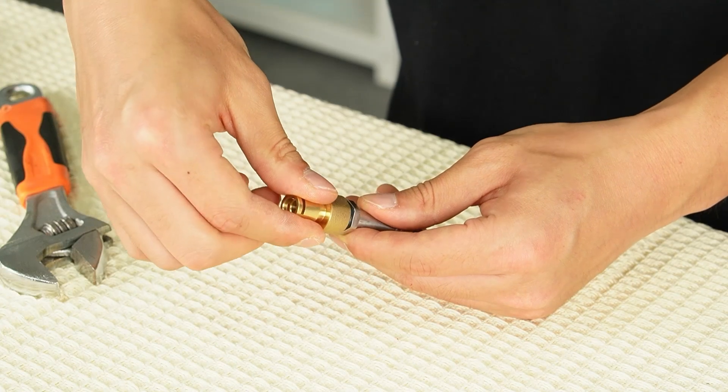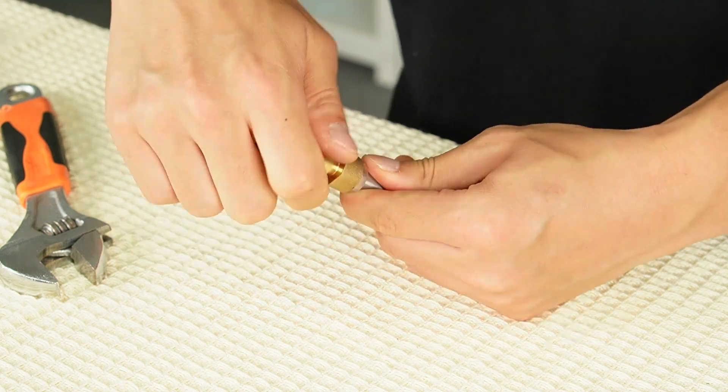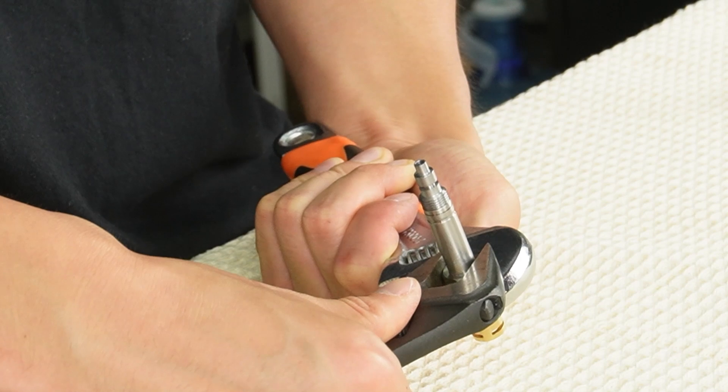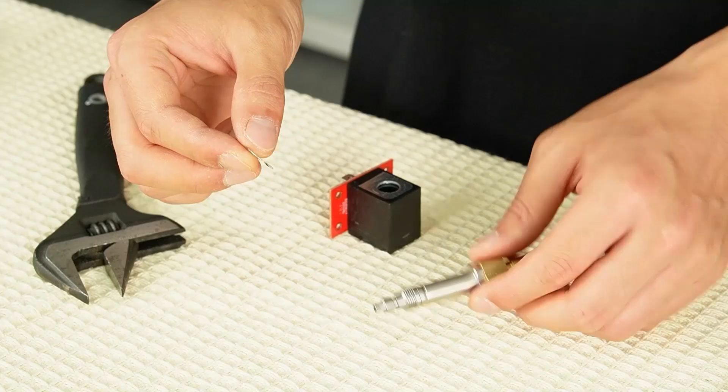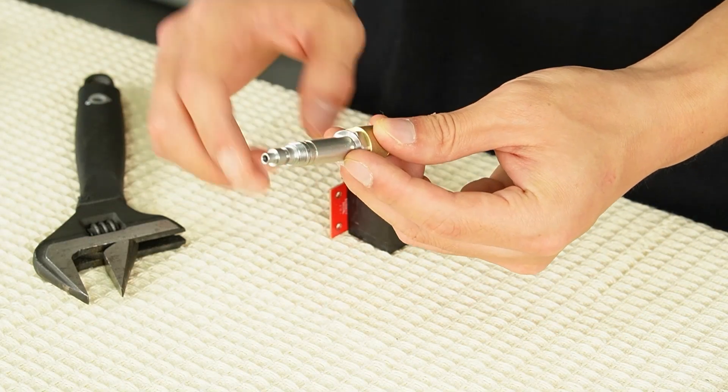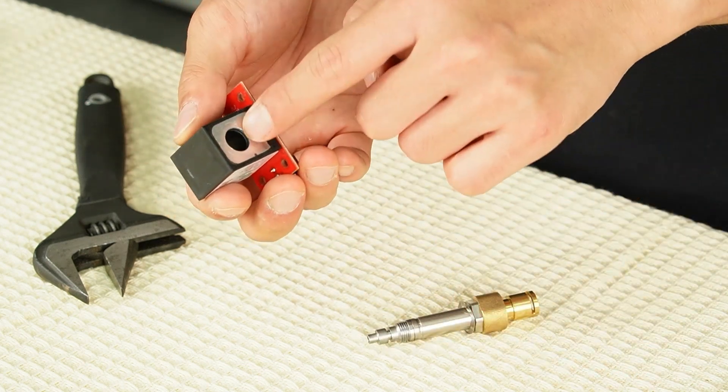Reattach the brass connector to the valve body and tighten it securely using the wrenches. Insert the valve body through the thinner washer and reinstall it into the coil housing.